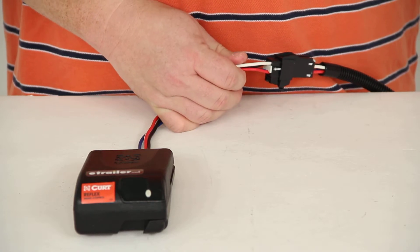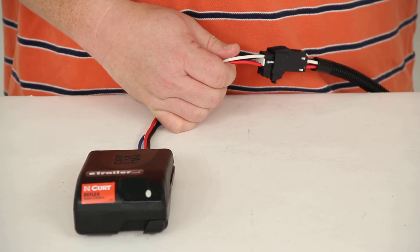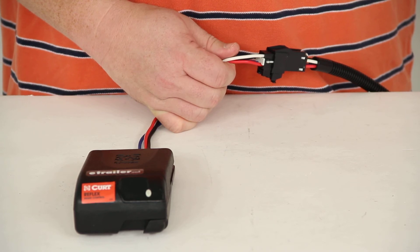That should just about do it for our Curt custom wiring adapter for trailer brake controllers with the dual-plug in number C51422.